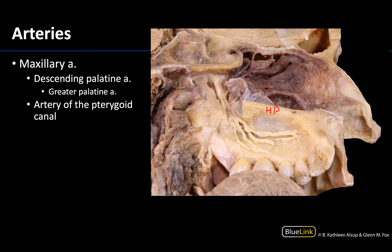The descending palatine artery is one of the terminal branches of the maxillary artery. This artery will descend from the pterygopalatine fossa through the palatine canal — often referred to as the greater palatine canal — in this general region. At around the level of the greater palatine foramen, there is going to be a name change to the greater palatine artery, which will run along the hard palate and will be the dominant supply of the hard palate.